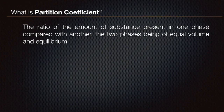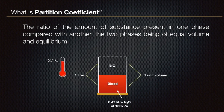What is partition coefficient? To understand the term partition coefficient, consider the example of nitrous oxide in blood. The partition coefficient is defined as the ratio of the amount of substance present in one phase compared with another, the two phases being of equal volume and in equilibrium. There is a unit volume of one liter of nitrous oxide above the same unit volume of blood containing dissolved nitrous oxide in equilibrium at 37 degrees Celsius. The volume of nitrous oxide dissolved in these circumstances is 0.47 liters, and the ratio of 0.47 to 1 is the blood-gas partition coefficient for nitrous oxide.